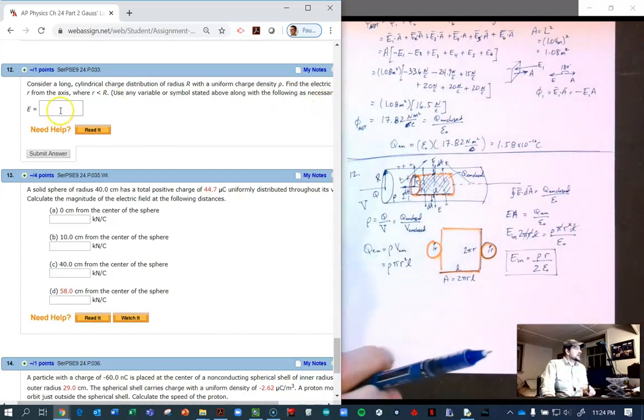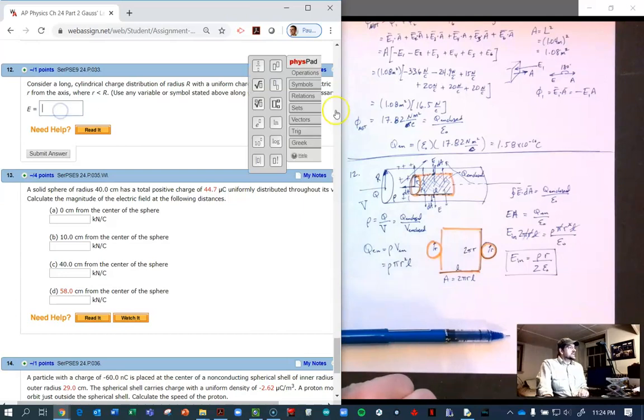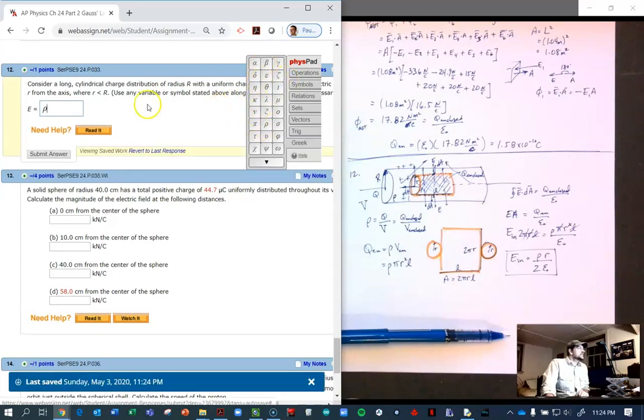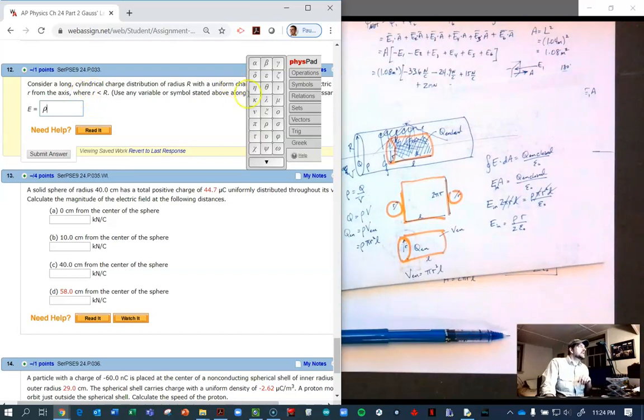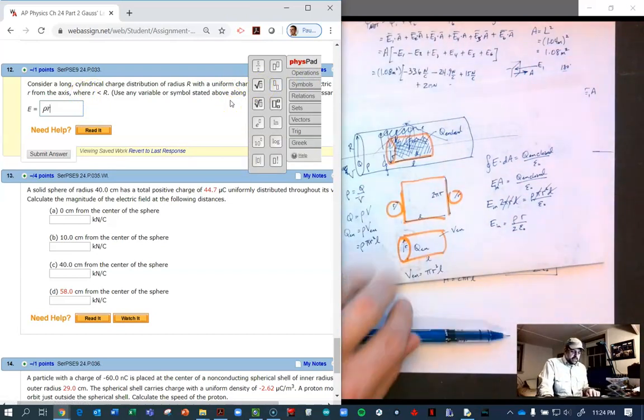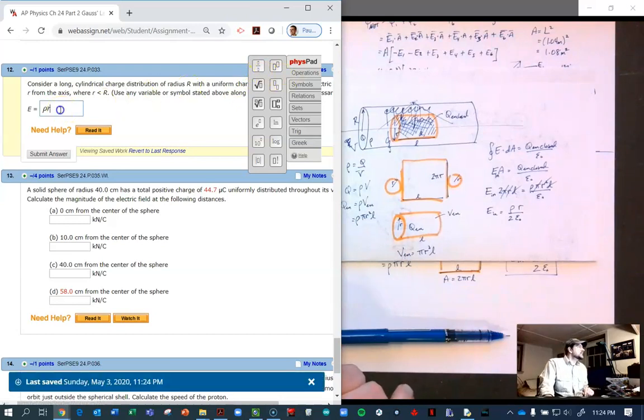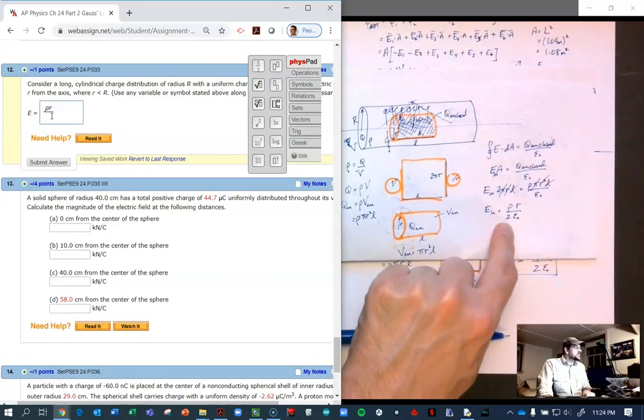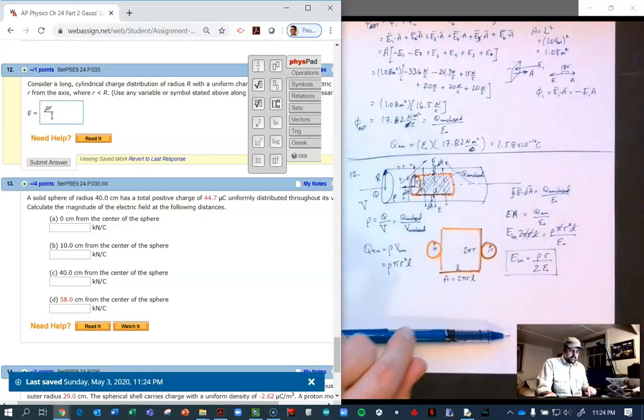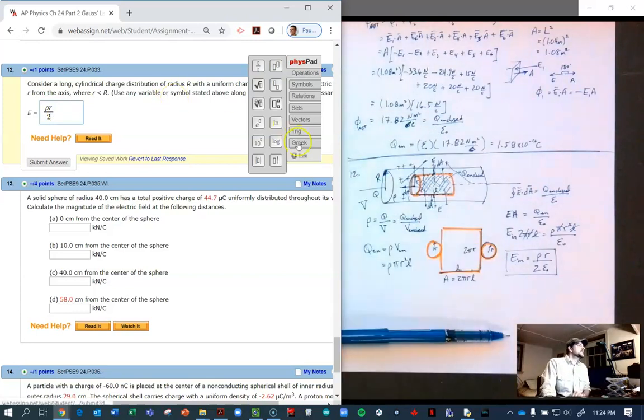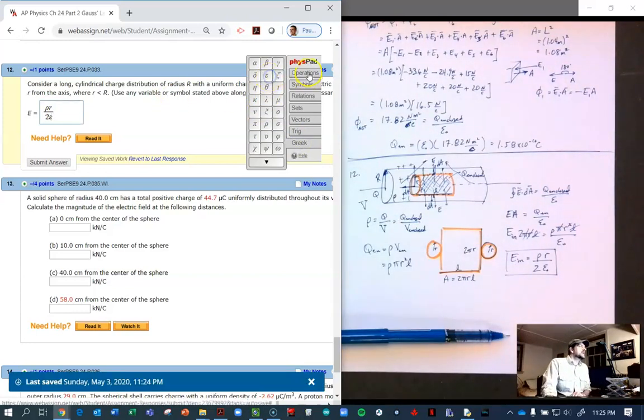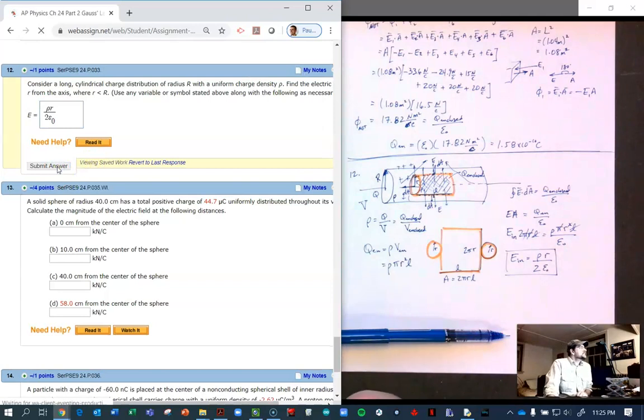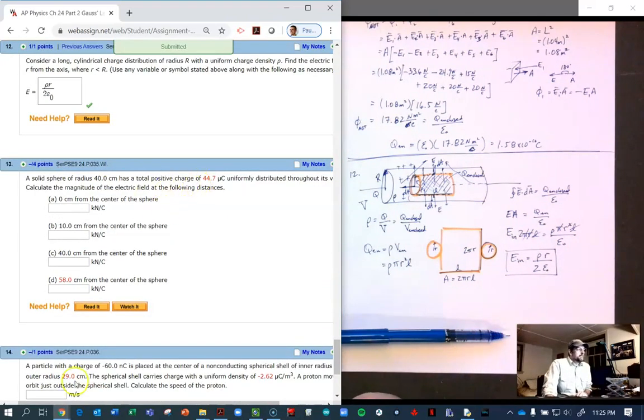Let's type it in, it's symbolic. We need Greek symbol ρ, we need a little r, and then we need to divide by 2 times epsilon naught. We're going to do Greek epsilon, operations subscript, and then the naught is a zero. Let's see if this works. Yay, that's it for that one.